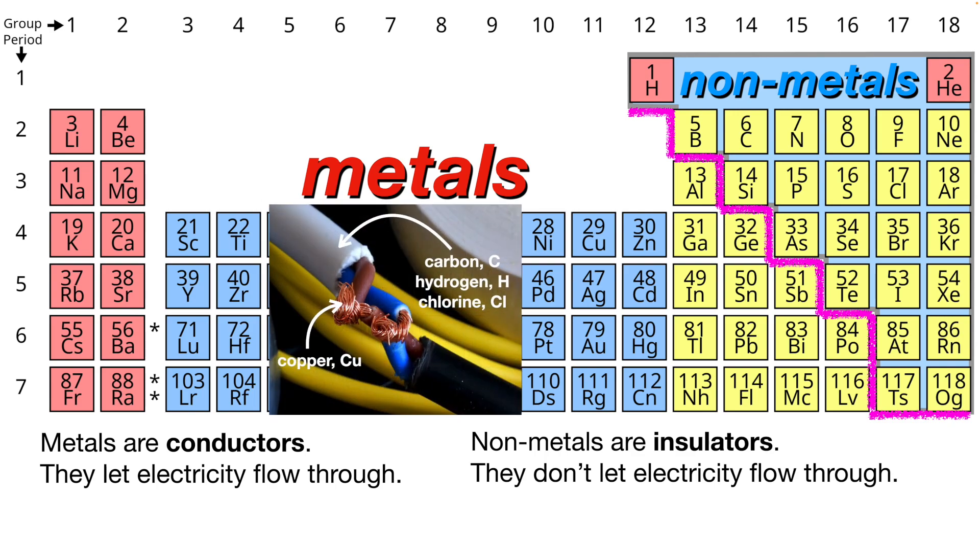If you cut open a wire, the middle will be made of copper, which is a metal allowing the flow of electricity, and the outside is some sort of plastic, possibly made from a combination of carbon, hydrogen, and chlorine. So we can see the difference between metals and non-metals and their properties inside a wire. We don't want the electricity jumping out of the wire, we just want it flowing through.